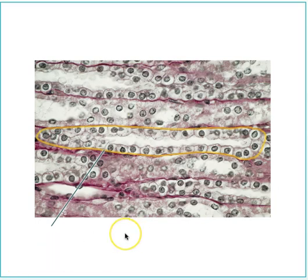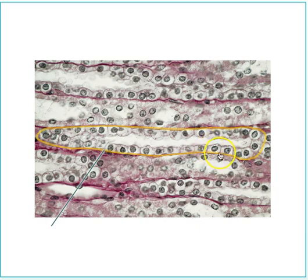We're going to identify the tissue type and also identify the name of the highlighted yellow structure. The yellow structure is the basement membrane. Let's walk through it. We see a lumen. We see the round nucleus. We see that the cell is as tall as it is wide. So this is simple cuboidal epithelium.